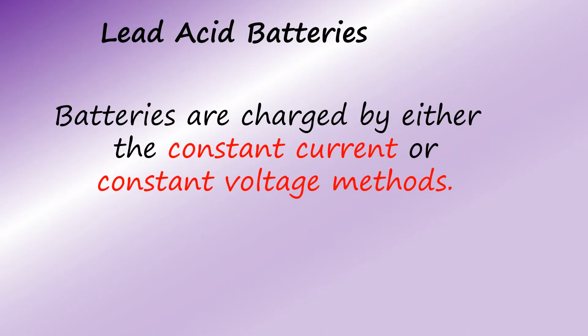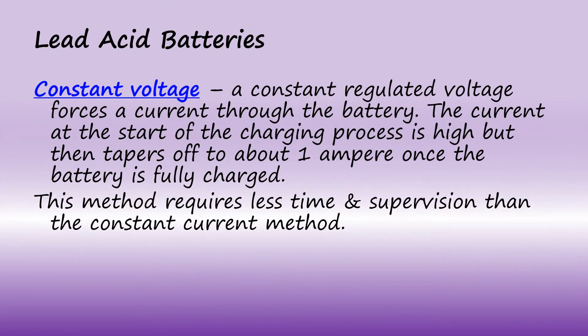Batteries are charged by either the constant current or constant voltage methods. Under the constant voltage method, a constant regulated voltage forces a current through the battery. The current at the start of the charging process is high, but then tapers off to about one amp once the battery is fully charged. This method requires less time and supervision than the constant current method.